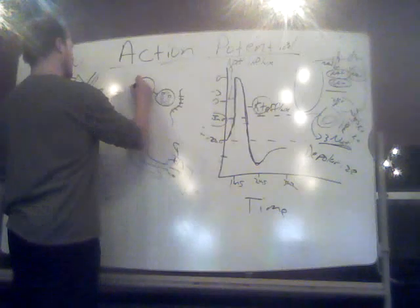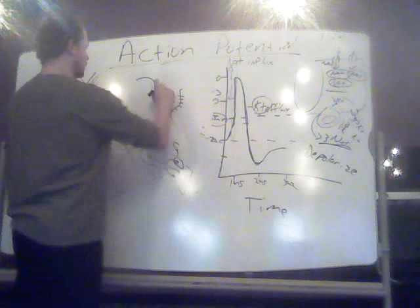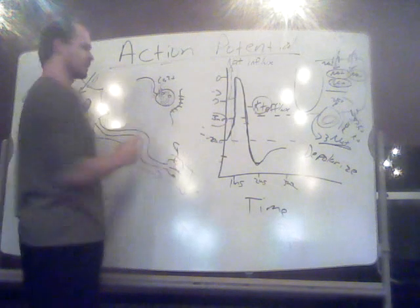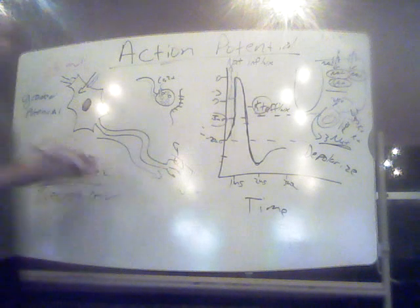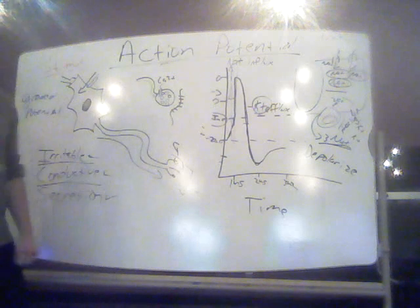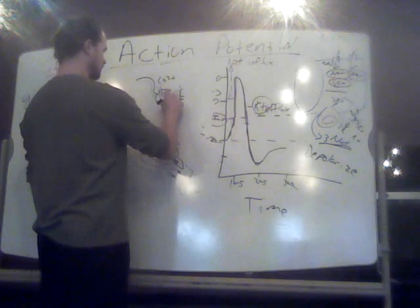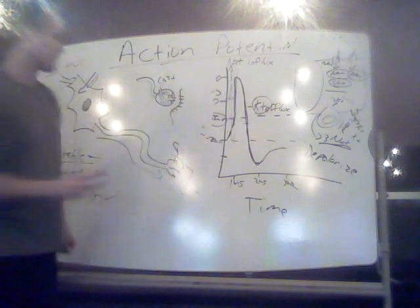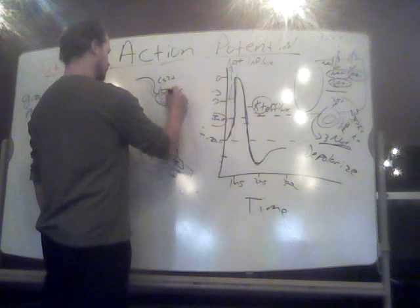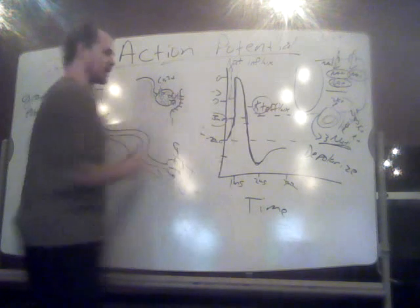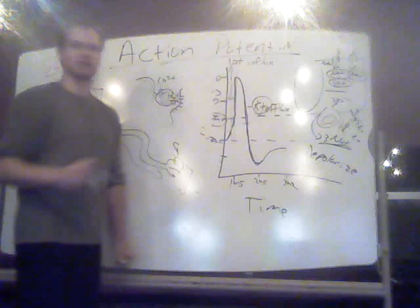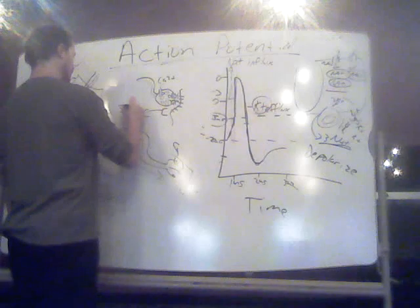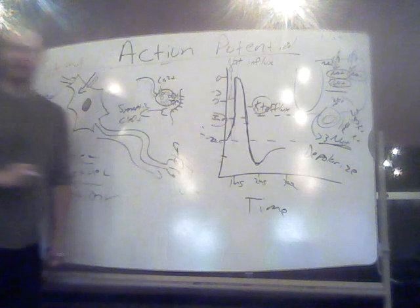Once that action potential propagates its way down to the synaptic terminal, there are calcium-sensitive gates that are going to open. There's really no calcium inside the cell whatsoever. So once the calcium gates open, calcium will diffuse inward. And then that influx of calcium will stimulate these synaptic vesicles to fuse with the cell membrane. They're going to fuse with the cell membrane, and then via exocytosis, you're going to dump out neurotransmitter. The neurotransmitter is going to diffuse down this space, which is what we call the synaptic cleft.